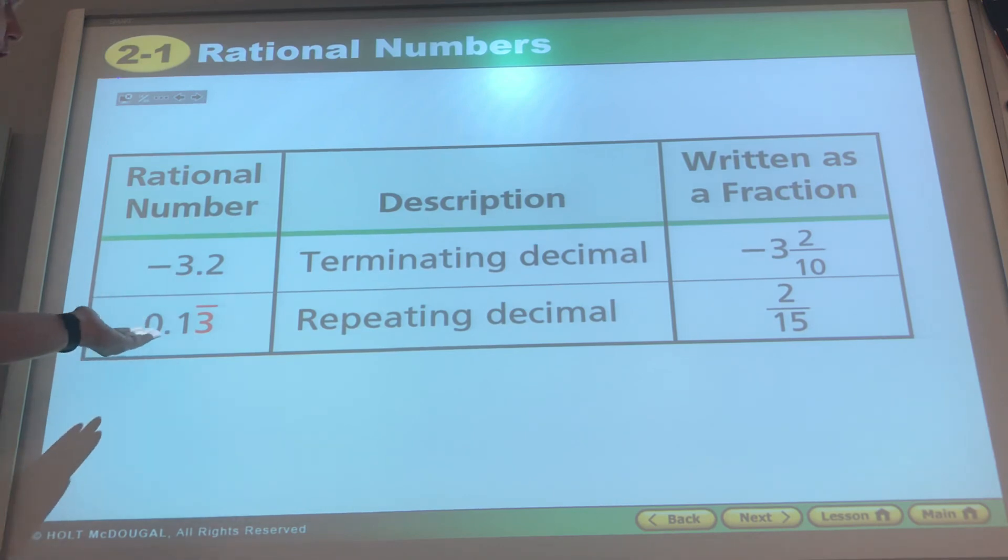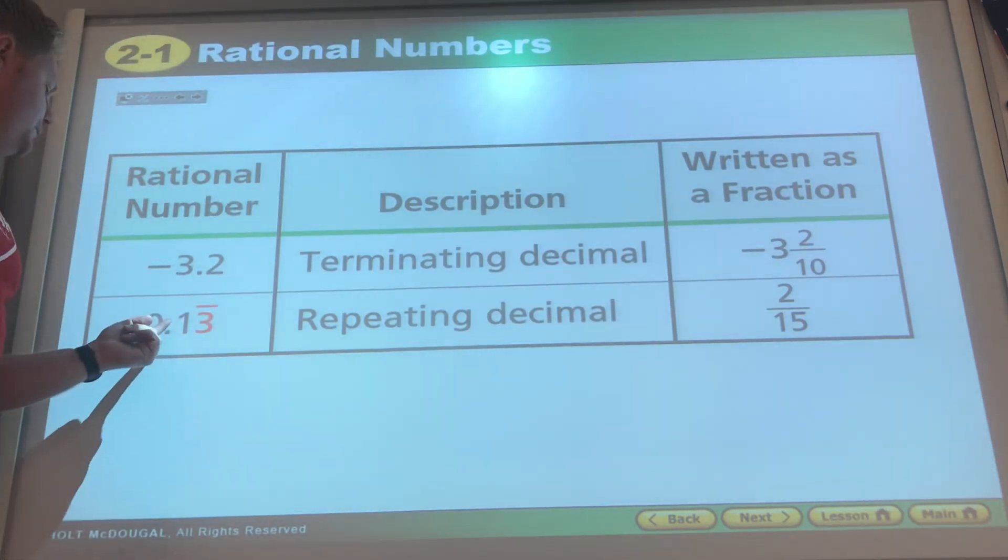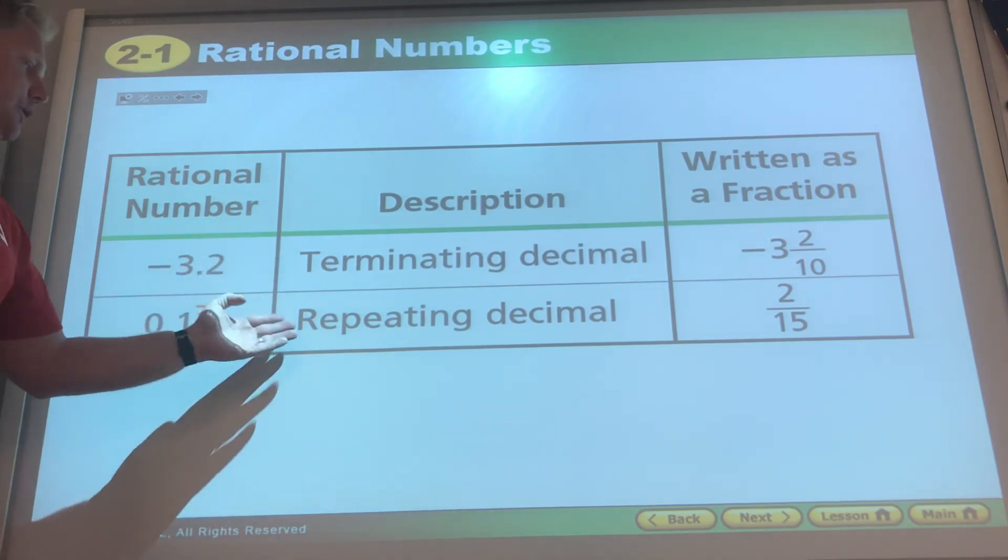A repeating decimal you might think of like 1/3, how it's 0.33333 repeating. Well 2 5/15 goes 0.13 and repeats. Those are both rational numbers because they either terminate or they're repeating.